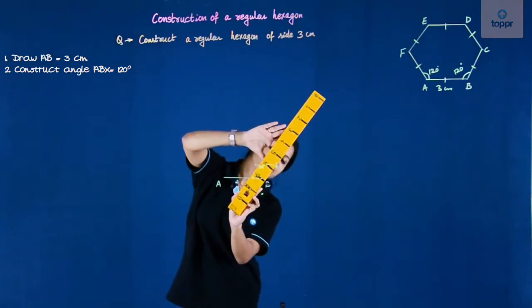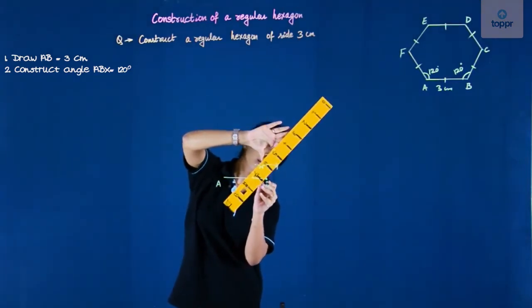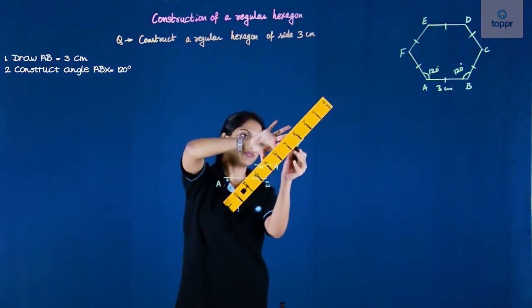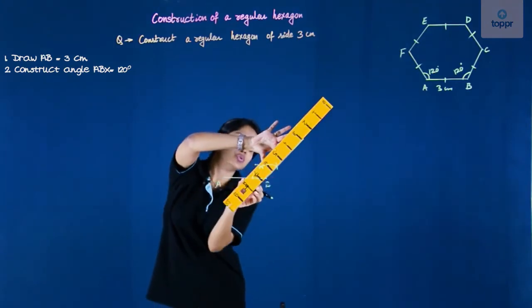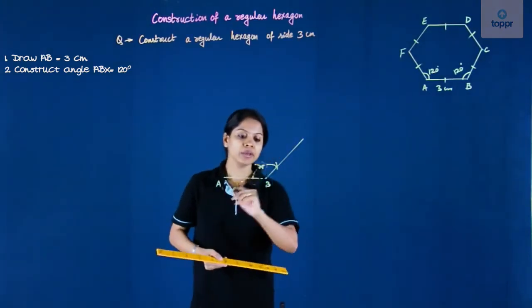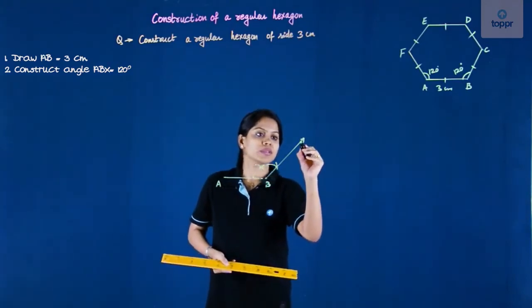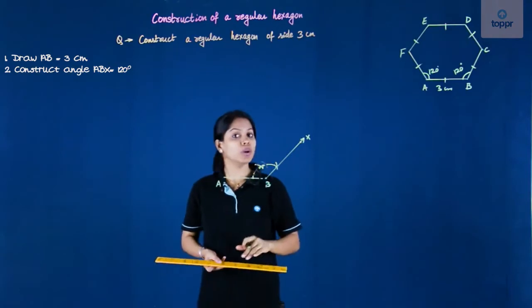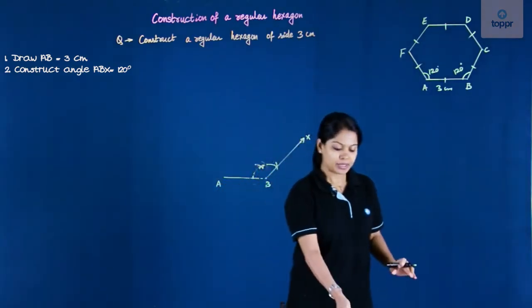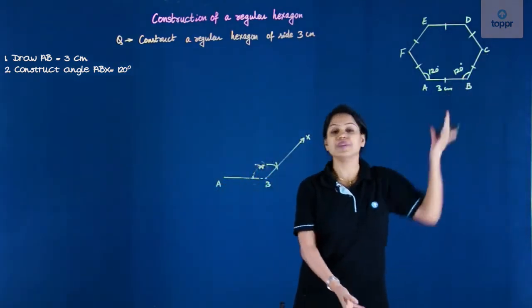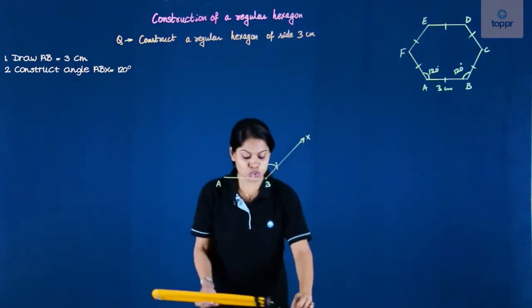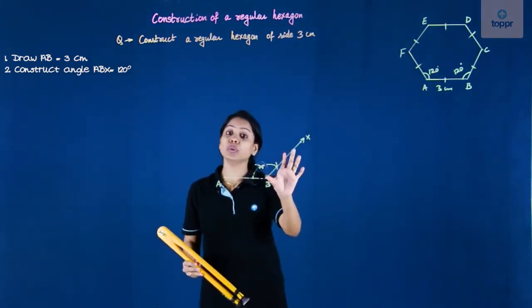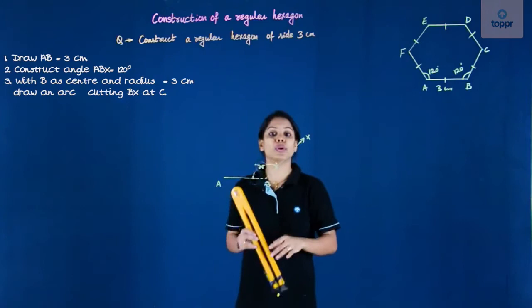So I will just extend it from B in the form of a ray. So what I have drawn is actually a ray BX, so that angle ABX is equal to 120 degree. But I also know that the measure of BC is 3 centimeters again, so we can just cut 3 centimeter with B as the center to get our point C.